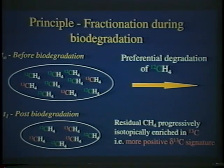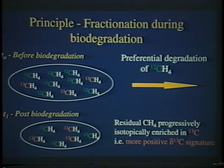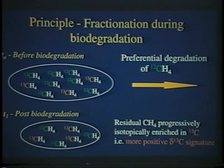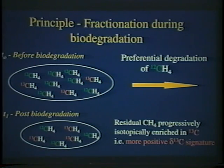Fractionation also takes place during an actual reaction where bonds are broken. A classic example from the literature is fractionation during biodegradation or microbial oxidation of methane. Before biodegradation, the delta C13 signature of a pool of methane is simply the C13 to C12 ratio of that pool. During degradation, we see preferential degradation of the light, C12-laden molecules into the breakdown products. After biodegradation has been taking place for some time, the residual methane pool becomes progressively enriched in the heavy isotope C13 — gaining a more and more positive delta C13 signature. This has been known for some time and used classically to identify a methane plume that has undergone biodegradation.